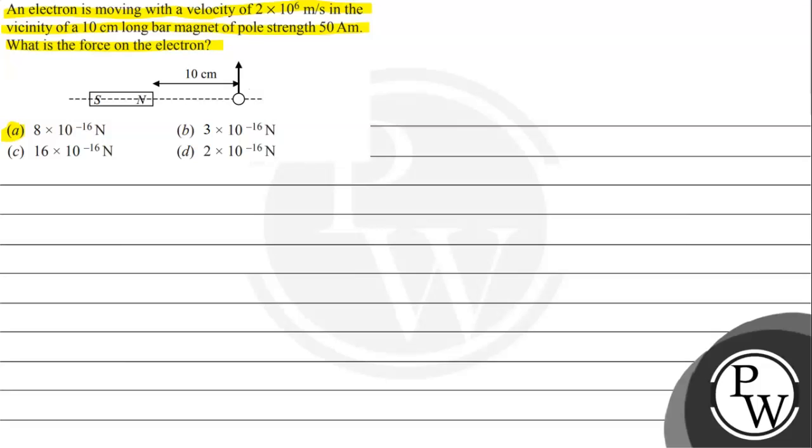Option A given 8 × 10^-16 Newton. Option B 3 × 10^-16 Newton. Option C 16 × 10^-16 Newton. Option D given 2 × 10^-16 Newton.